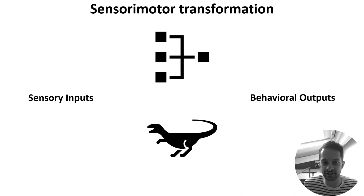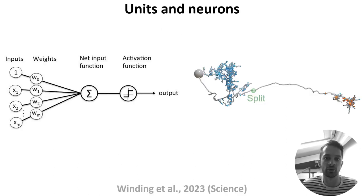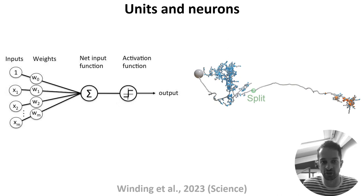But how do these systems compute these transformations? In ANNs, these transformations are realised by units, which sum their weighted inputs and pass them through an activation function, like ReLU. In brains, the equivalent are neurons, which are not just simple points, but complex 3D structures, like the neurons shown here.